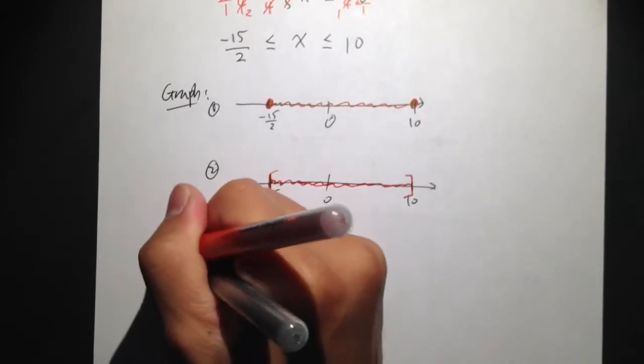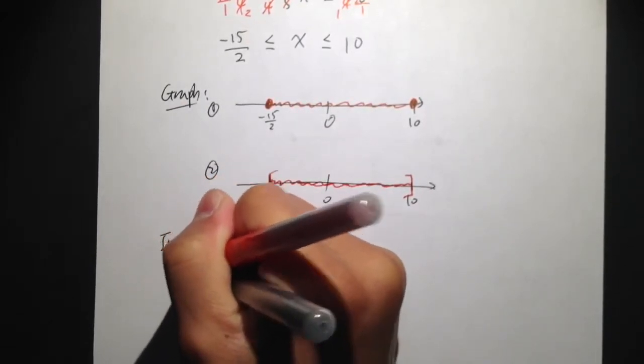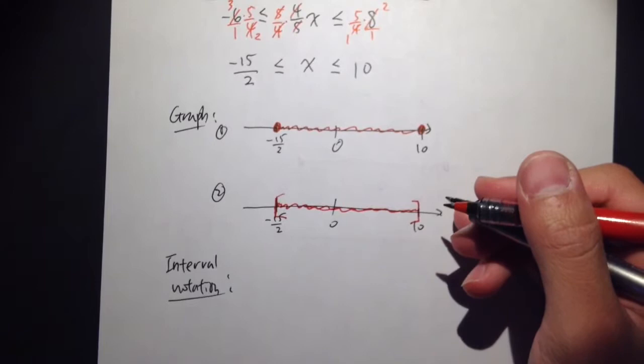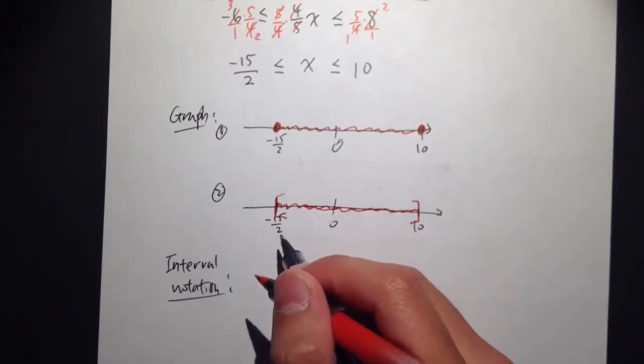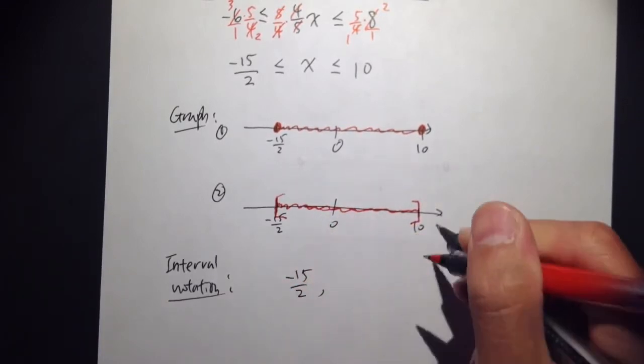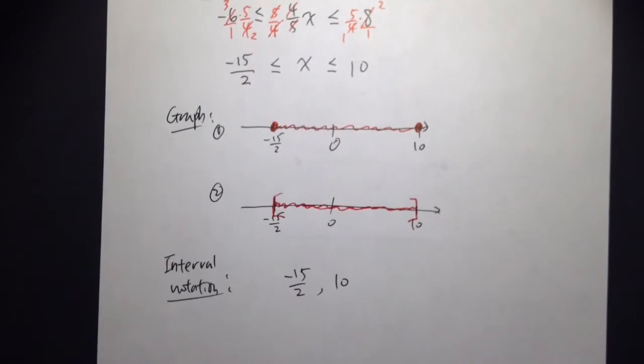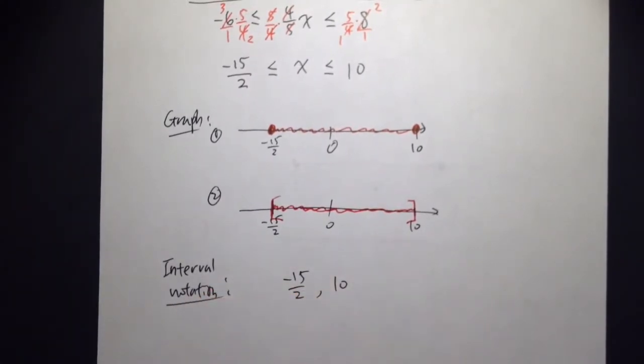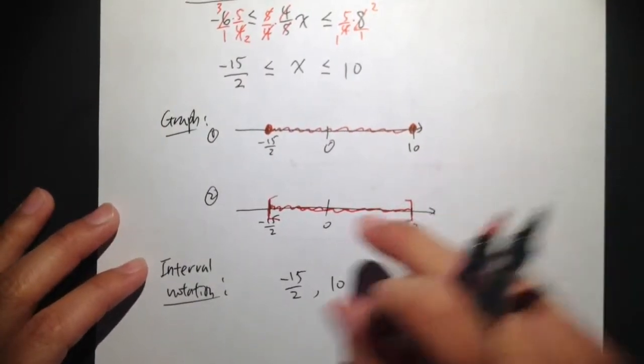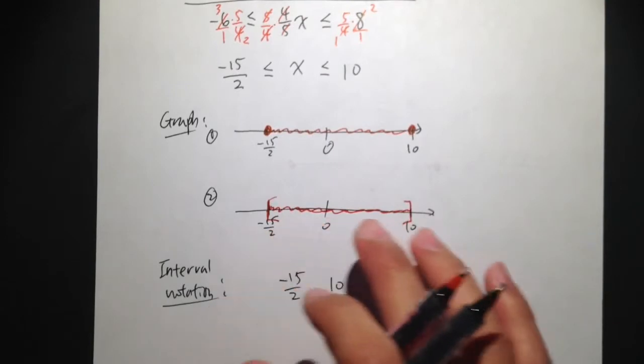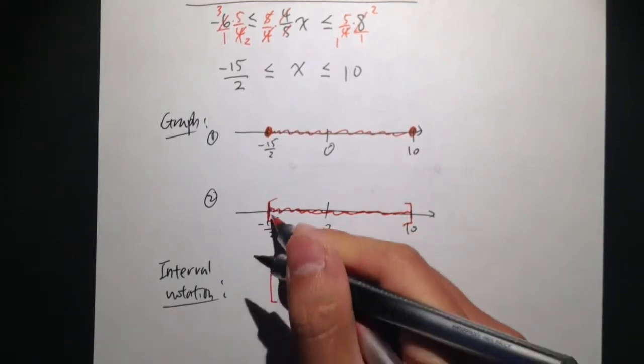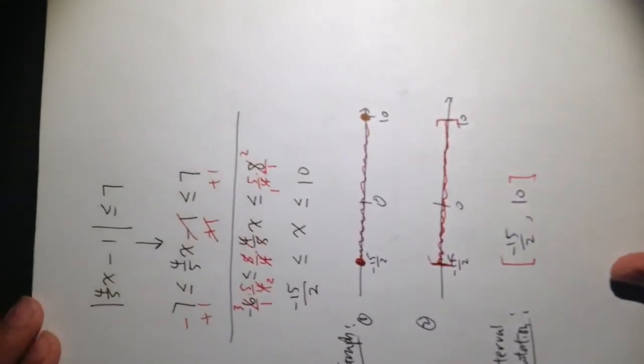Then, interval notation. And if you choose to do the graph in this way, you're pretty much done. Write down the left endpoint first, which is negative 15 over 2. Put comma, the right endpoint, which is 10. And then, for interval notation, you have to use either parentheses or brackets. So, that's why I said, if you choose to use parentheses or brackets for the graph, right here, you are done. We can just take the bracket down.